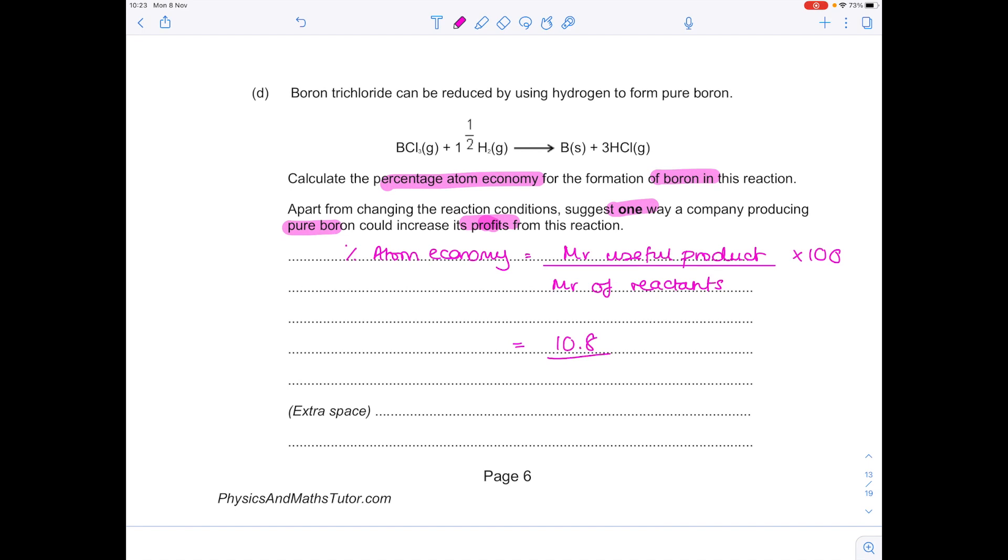Boron has an AR or an MR of 10.8. Now, let's do the reactants. We need to do 10.8 plus three lots of chlorine plus one and a half hydrogens, which gives us 120.3. Pop that final calculation into your calculator, so you get a percentage atom economy of 8.98.